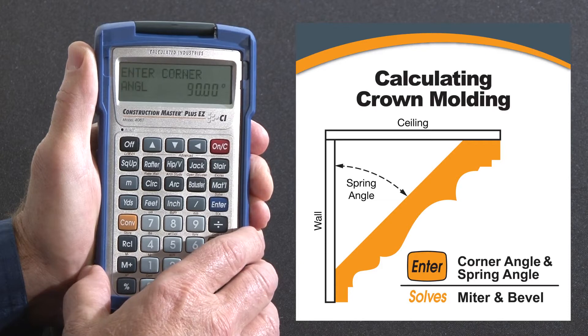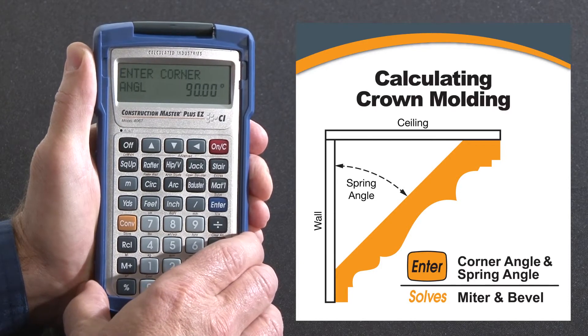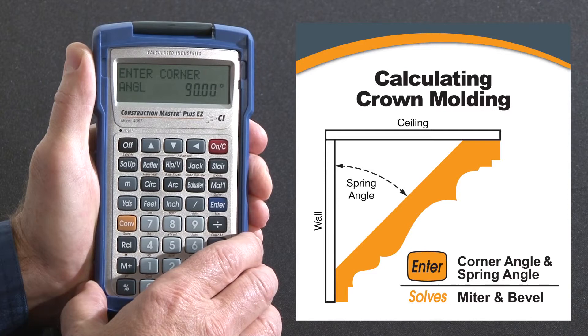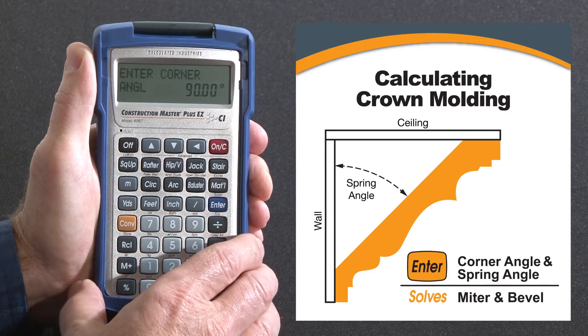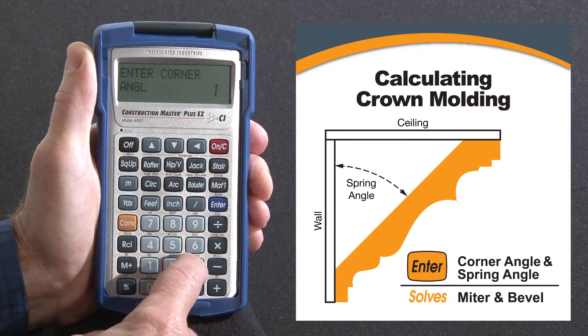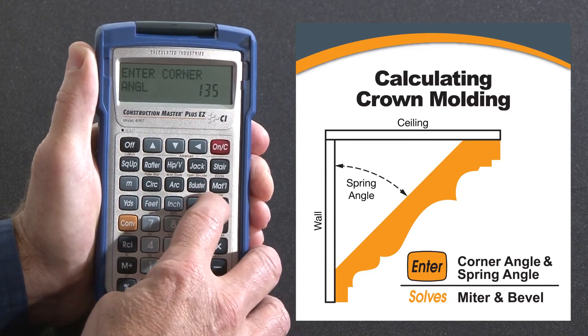So now let's say we're doing something different. We're going to put crown molding around a bay window, so we've got a 135-degree corner. So the angle is 135 — enter that.